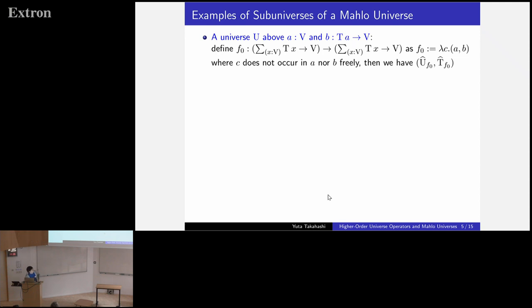Then, let's see an example of subuniverses. First, a universe containing A and B, a family of sets AB. In this case, define F0 in this way. Here, we use a dummy variable C, namely C does not occur in A nor B freely.